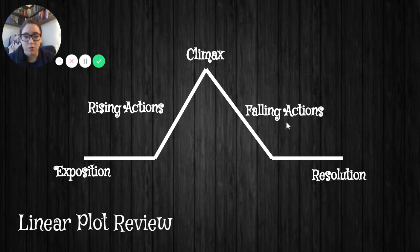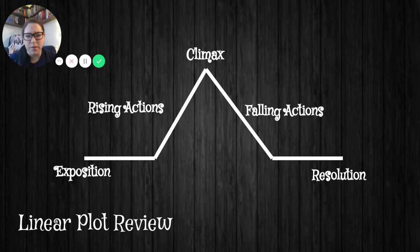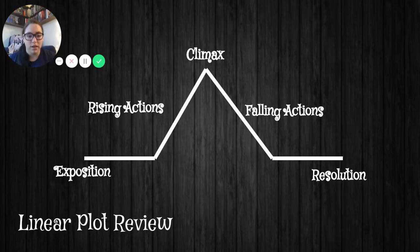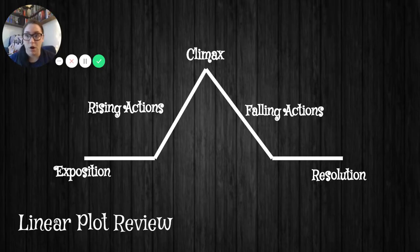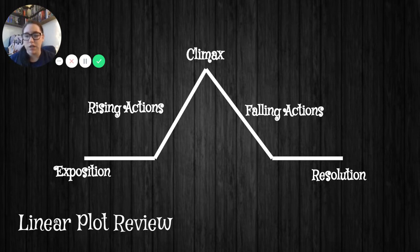Finally, we have the resolution — that's the end game for our characters in the story. If there's going to be a sequel, they will sometimes leave it on a cliffhanger, which means there are some open-ended things you can interpret and you don't know what happens to those characters. But in general, in a linear plot, there is some type of resolution so we know exactly what happens to the characters. This is kind of a review of everything you guys learned in 6th and 7th grade, but I wanted to make sure we touched on that before we jump into the new element, which is nonlinear plot.